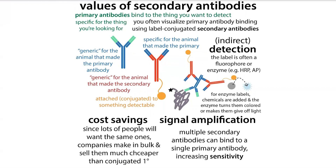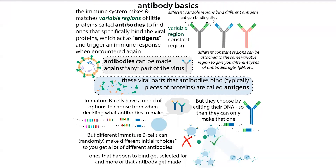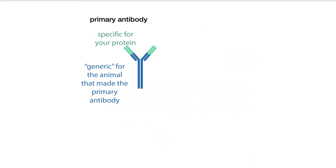The secondary antibody is going to recognize the generic part of the primary antibody. If you look at the anatomy of an antibody, it has constant regions and variable regions. The constant region is kind of generic for the animal that makes it — humans will have one type of constant region, a mouse will have another, and a rabbit will have another. Each antibody within that animal will have different variable regions, and the variable region is the part that actually binds to the thing of interest. So we have this generic constant region and this unique variable region.